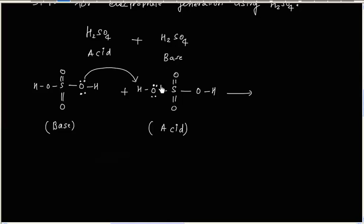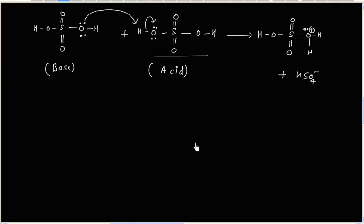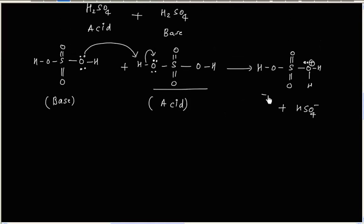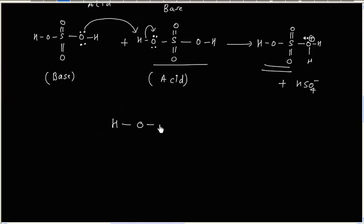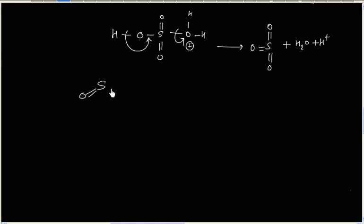The base molecule gains H⁺ to form an OH₂⁺ species with a positive formal charge on oxygen, releasing HSO₄⁻. Now we want to generate SO₃ from this molecule. Since H₂O is a good leaving group, we break the bond to release H₂O and H⁺, thereby generating electrophile SO₃ from H₂SO₄.